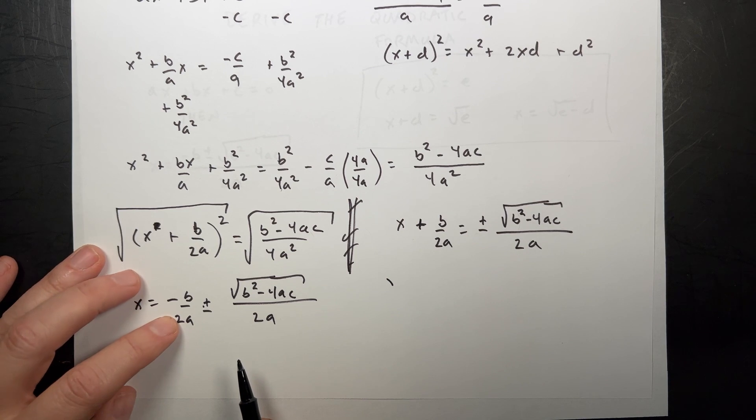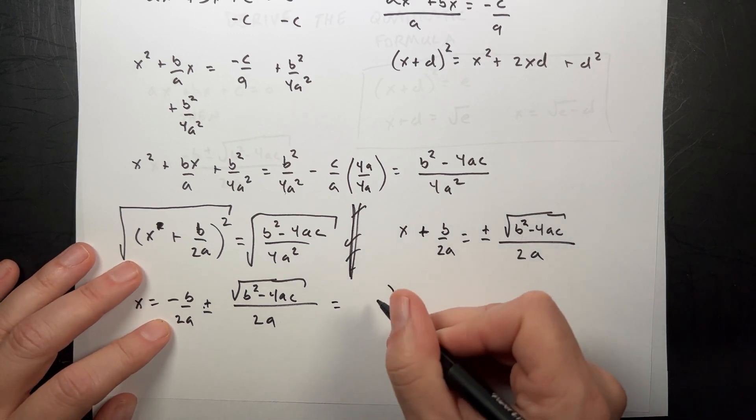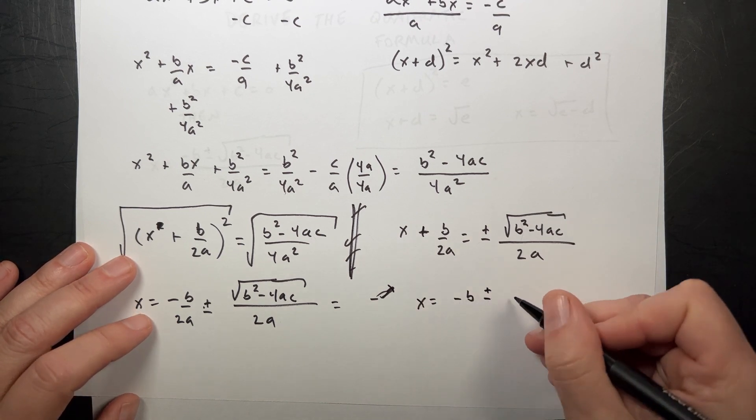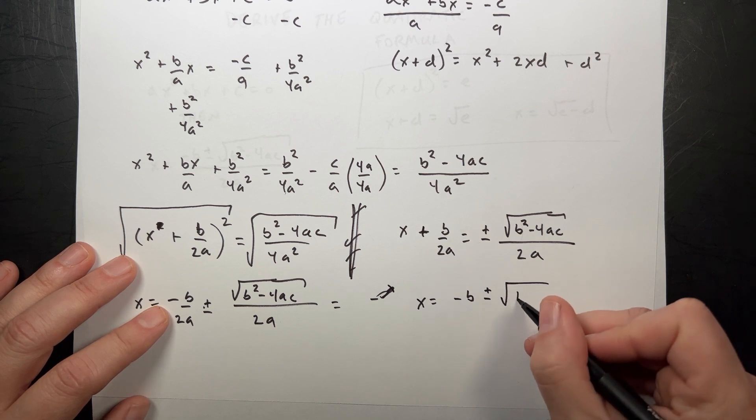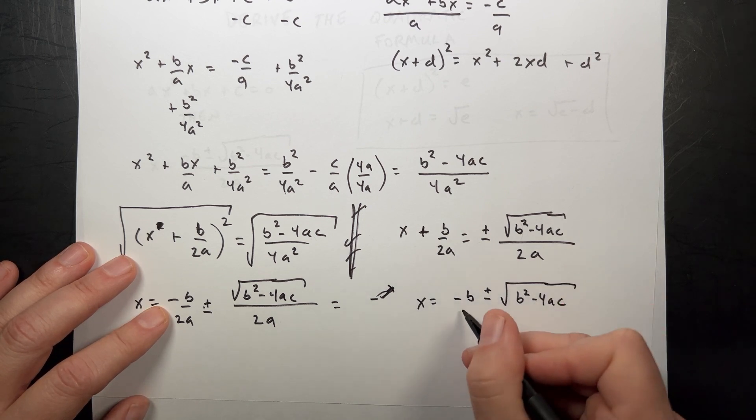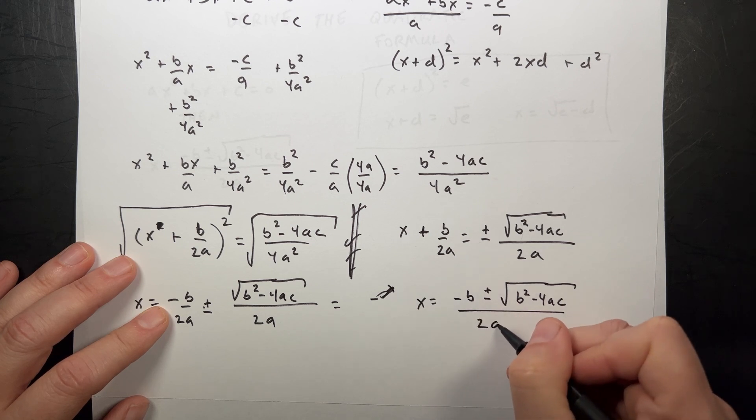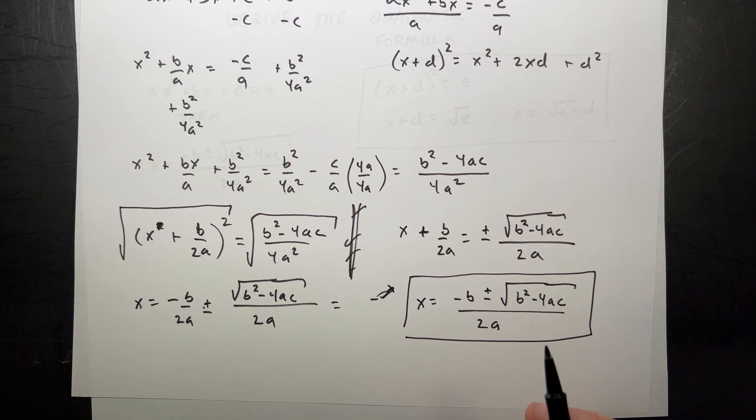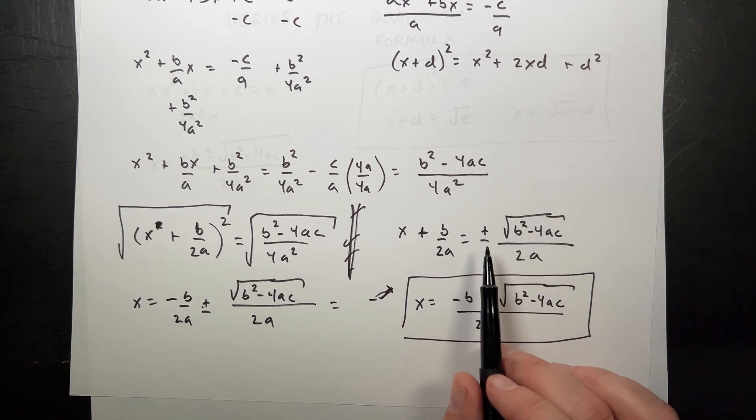What do you know? There's a common denominator. So I can write that as negative, I want to put it over here, x equals negative b plus or minus the square root of b squared minus 4ac over 2a. That is the quadratic formula.